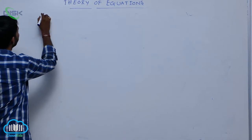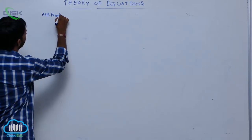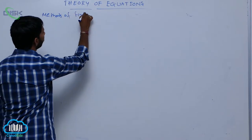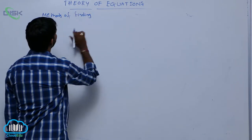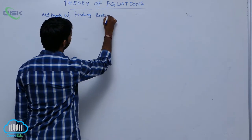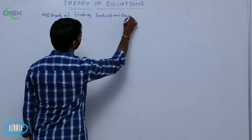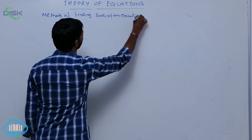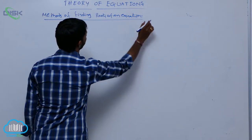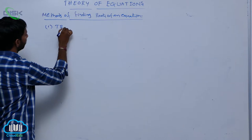Methods of finding roots of an equation. The first method is the trial and error method.